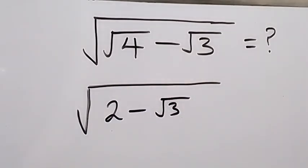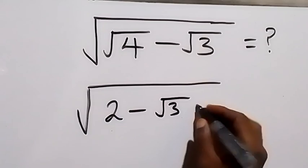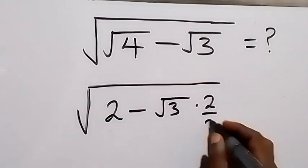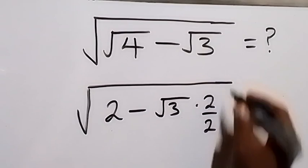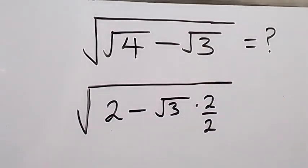And then from here, if we multiply this by 2 and we divide this by 2, it's as if we have not done anything because 2 divided by 2 is 1. So now we can write this again as square root of